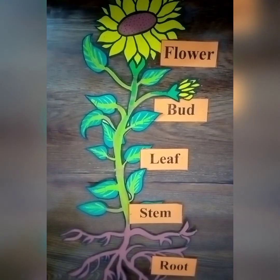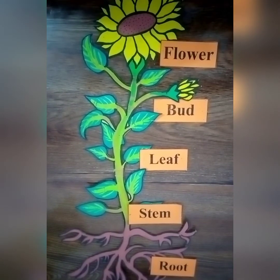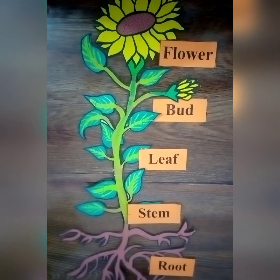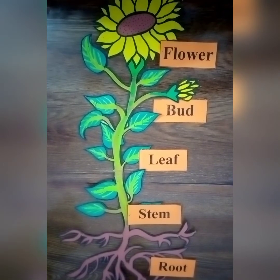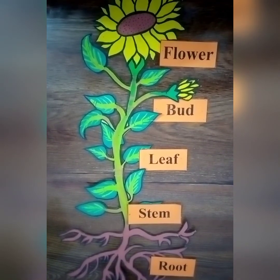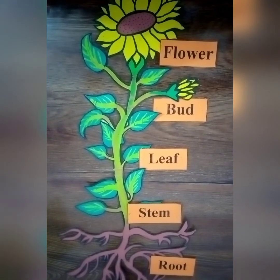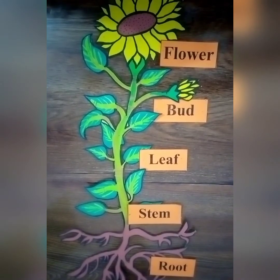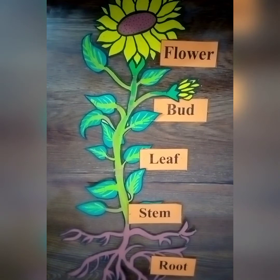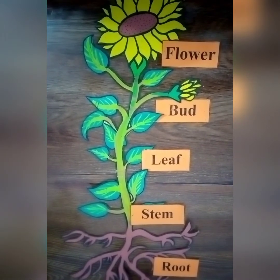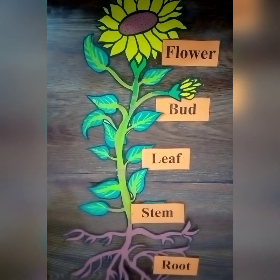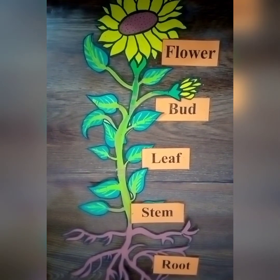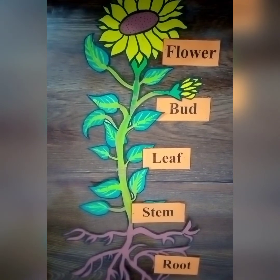The parts of the plant which we can see above the soil are called the shoot of a plant. The shoot includes flower, bud, leaf, and stem. The parts of the plant which we cannot see and are present below the soil are called the root of a plant.